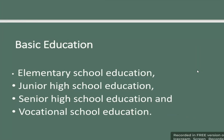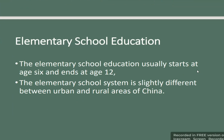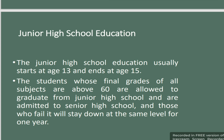Basic education includes elementary education, junior high school education, senior high school education, and vocational education. Elementary education usually starts at age 6 and ends at age 12. The elementary school system is slightly different between urban and rural areas of China. Junior high school education usually starts at age 13 and ends at age 15. Students whose final grade in all subjects is 60 or above are allowed to graduate from junior high school and are admitted to senior high school. Those who fail will stay at the same level for one year.